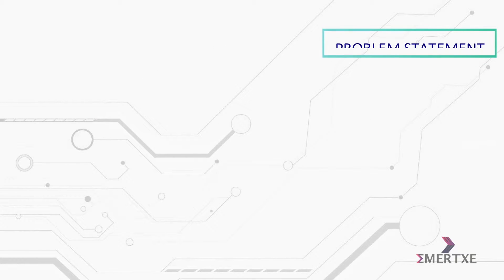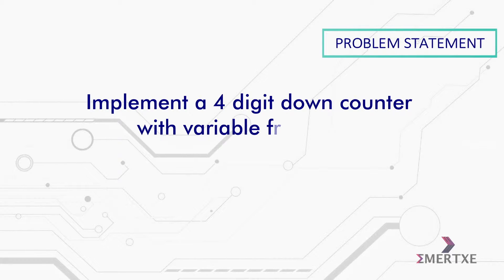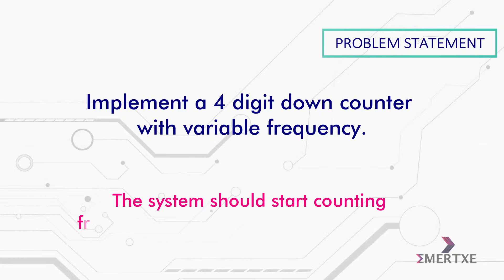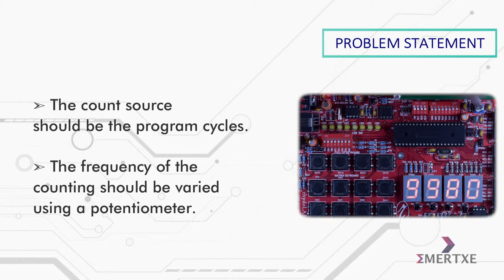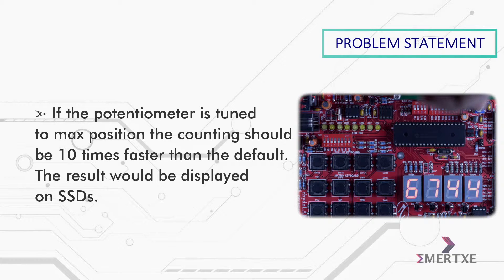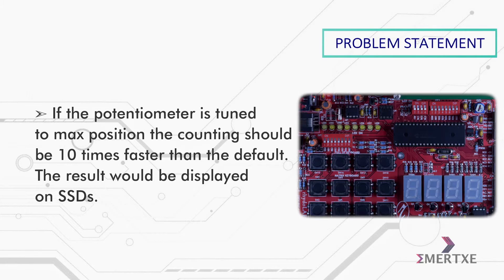In this assignment you have to implement a four digit down counter with variable frequency. The system should start counting from four nines to four zeros and then should stop. The count source should be the program cycles. The frequency of counting should be varied using the potentiometer. If the potentiometer is tuned to max position, the counting should be 10 times faster than the default. The result would be displayed on SSDs.